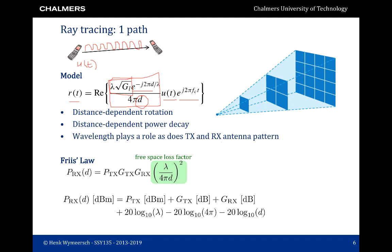If we take the power of the received signal, we can write it as a function of the transmit power. The received power at a certain distance d equals the transmitted power times the gain of the transmitter times the gain of the receiver along the line-of-sight direction times a multiplicative constant (lambda over 4*pi*d)^2. This is called the free space path loss factor. So the power decays as the square of the distance between transmitter and receiver. We can write this in the dB domain using the transmit power in dB, the antenna gains, and constants plus a factor that depends on d.